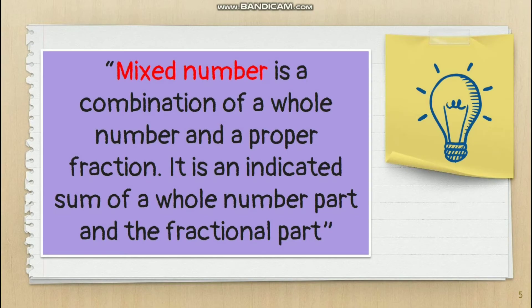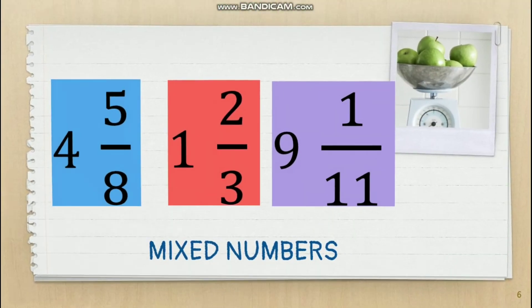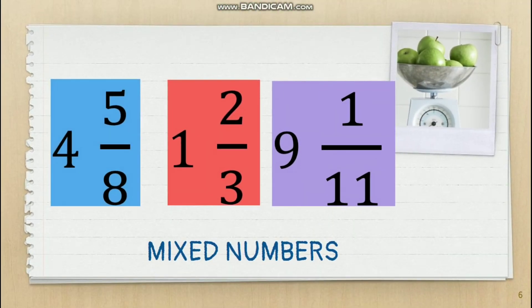A mixed number is a combination of a whole number and a proper fraction. It is an indicated sum of a whole number part and a fractional part. Examples include: 4 and 5/8, 1 and 2/3, and 9 and 1/11. It is very obvious that these are mixed numbers since each has a whole number and a fractional part.